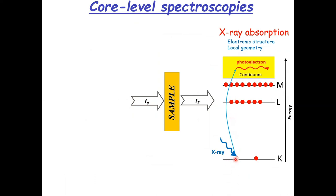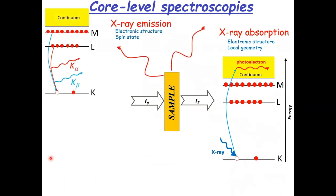Then, once you have created a hole in an inner shell, it's going to be refilled by X-ray emission. Typically for the K shell, it would be K beta, K alpha, or K valence to core. These emissions contain information about the electronic structure of the system and its spin state.